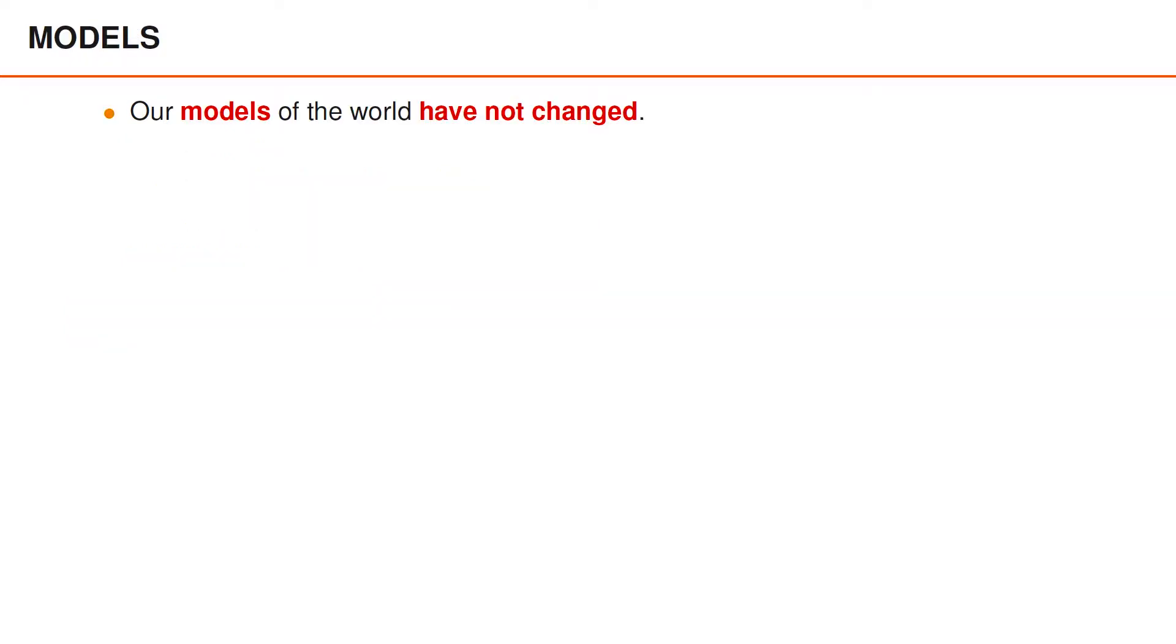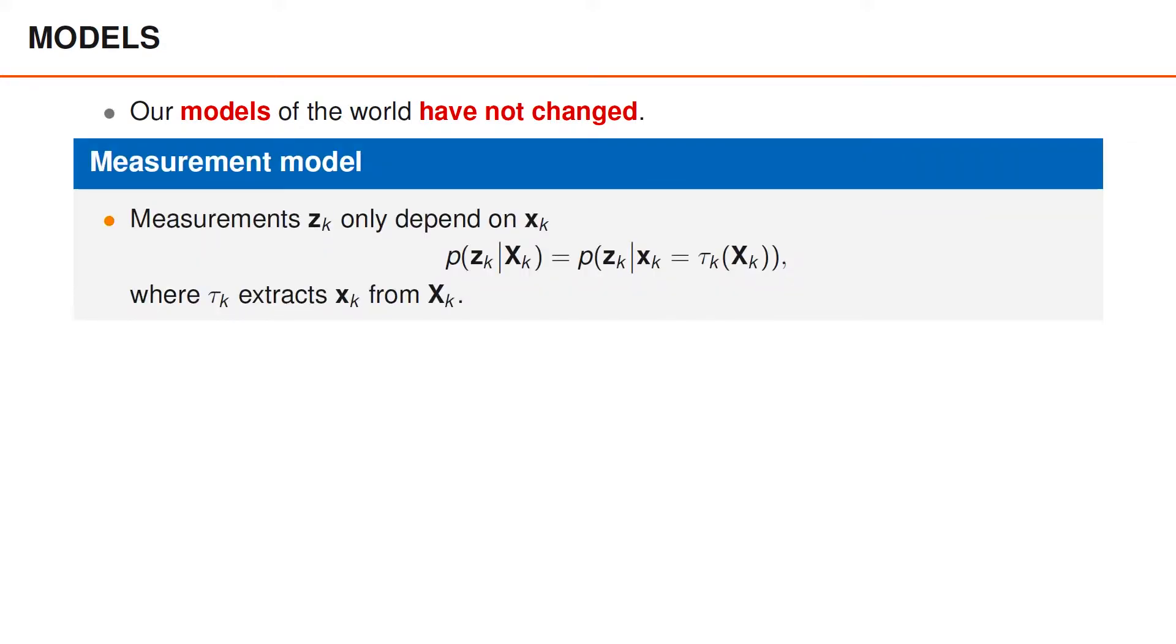The fact that we use sets of trajectories to perform multi-object tracking does not change our models of the world. For instance, if we believe that the standard models are accurate, those are the models that we will use. However, we still need to be able to express the models in terms of sets of trajectories. For the measurement model, we recall that the measurements at time k only depend on the set of objects at time k. To express the measurement model in terms of sets of trajectories, we introduce a function tau_k that extracts the set of objects at time k from the set of trajectories. It then follows that the distribution of zk given the set of trajectories is equal to the distribution of zk given that the set of objects xk is tau_k of capital xk. This means that as long as we have a model for the measurements, given the set of objects, we directly obtain a model for measurements given the set of trajectories.